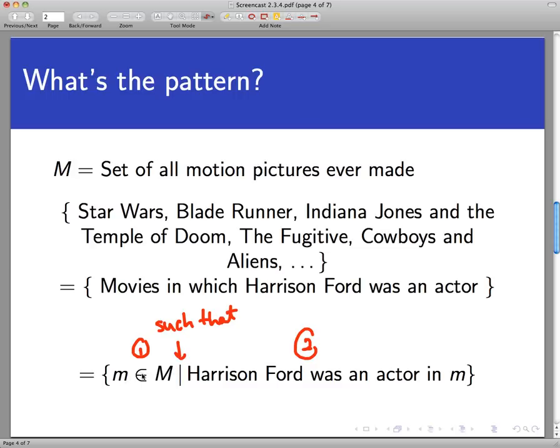So the set of all m in the set of movies such that, and in part two we're going to list the property that all these elements we want in our set have in common. So it's the set of all m in capital M such that Harrison Ford was an actor in m, the movie in question.